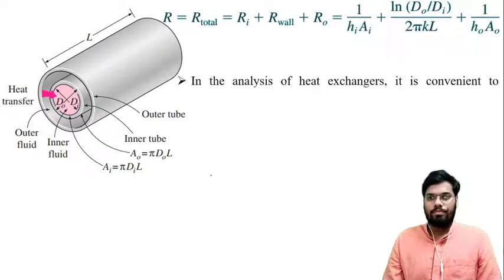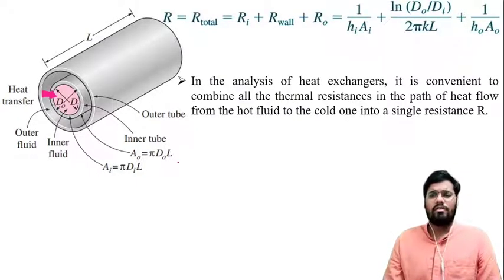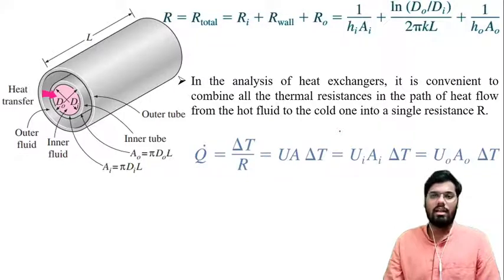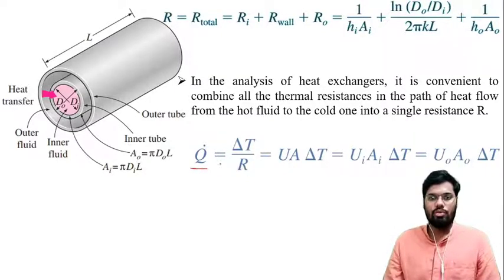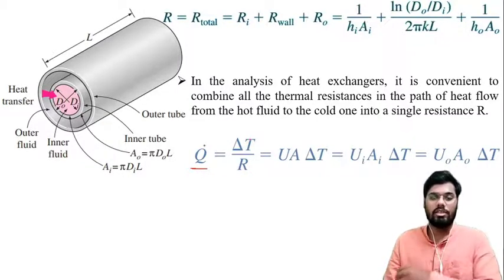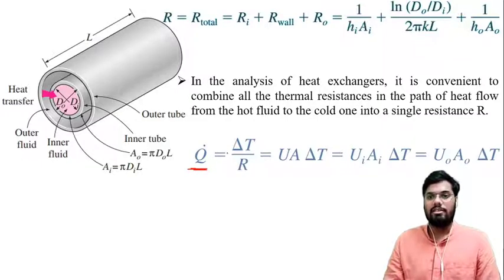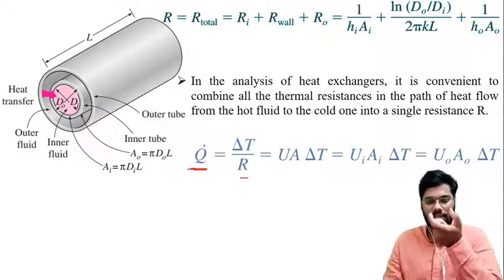This heat exchanger typically involves two flowing fluids separated by a solid wall, as we can see from the figure. In the analysis of heat exchangers it is convenient to combine all the thermal resistances in the path of heat flow from hot to cold fluid into a single resistance. We know the standard equation Q = ΔT/R, analogous to I = V/R in electrical circuits. Similarly in heat transfer, Q equals the temperature difference divided by the total resistance between the two temperatures.